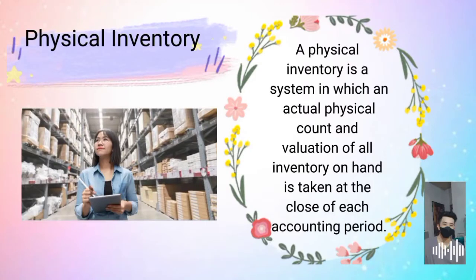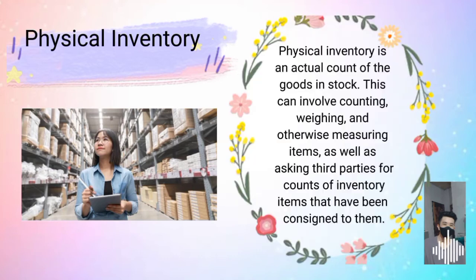Physical inventory is a system in which an actual physical count and valuation of all inventory on hand is taken at the close of each counting period. Physical inventory involves an actual count of the goods in stock, which can include counting, weighing, and otherwise measuring items, as well as asking third parties for counts of inventory items consigned to them.